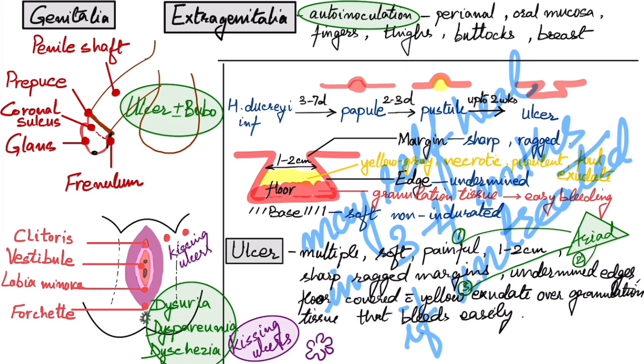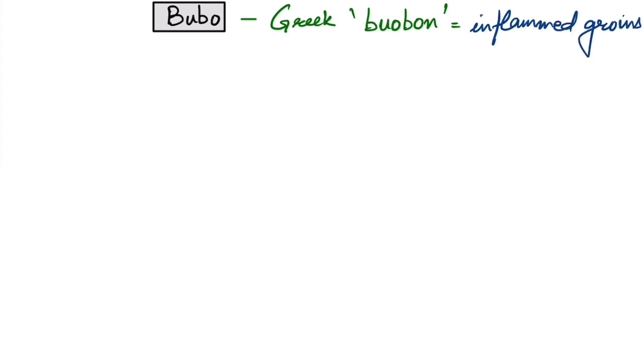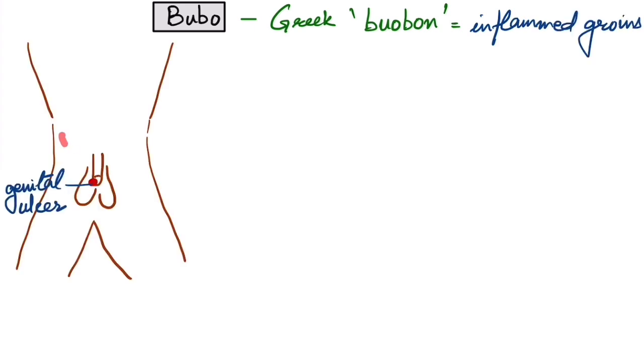Now we move on to the description of bubo. What is a bubo? It has been derived from a Greek word bubo, which literally means inflamed groins. There will be ulcer in the genitalia and then there will be inflammation of the inguinal lymph nodes in about 50% of the patients with genital chancroid ulcer.